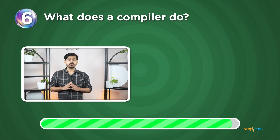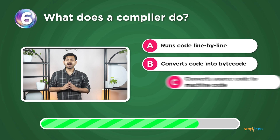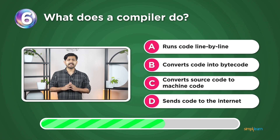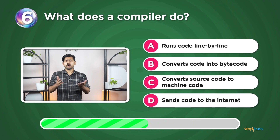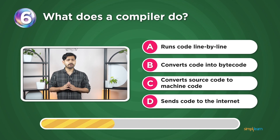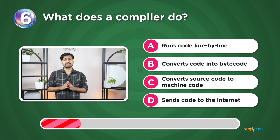Question 6: What does a compiler do? Runs code line by line, converts code into byte code, converts source code to machine code, or sends code to the internet?